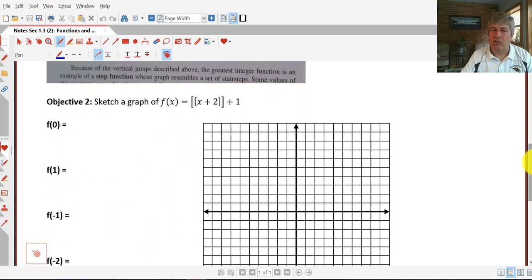We can sketch a graph by hand of a particular greatest integer function. Just like we've done before, to find our outputs, we put our input into the function and simplify.